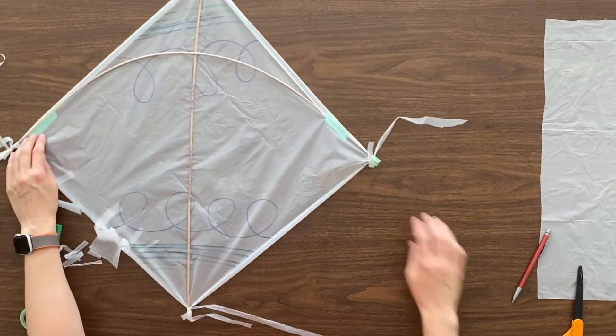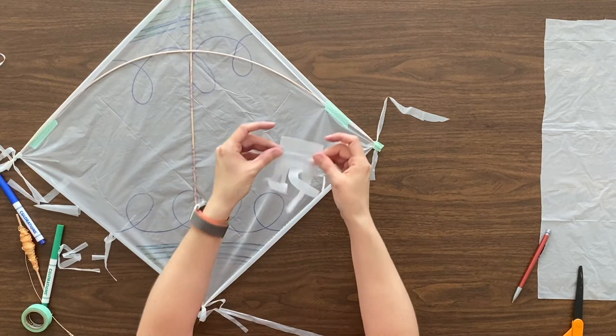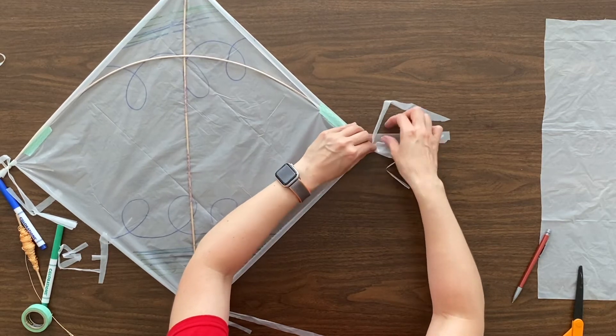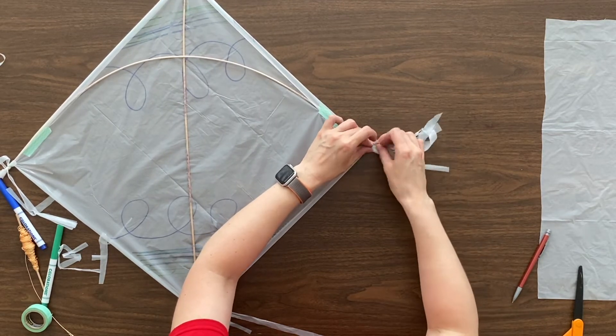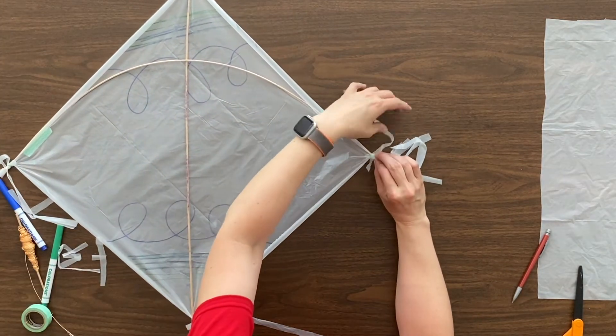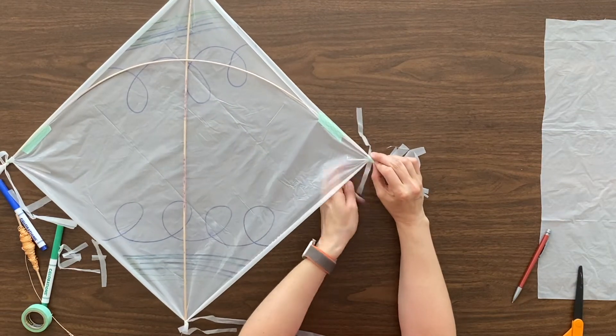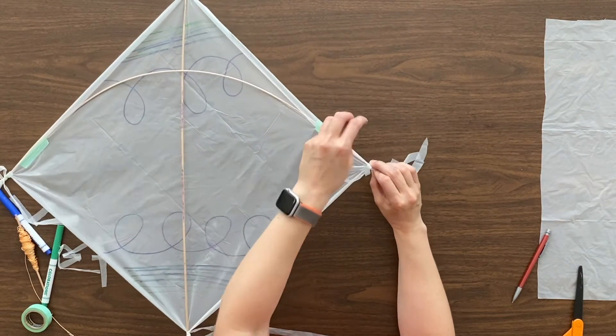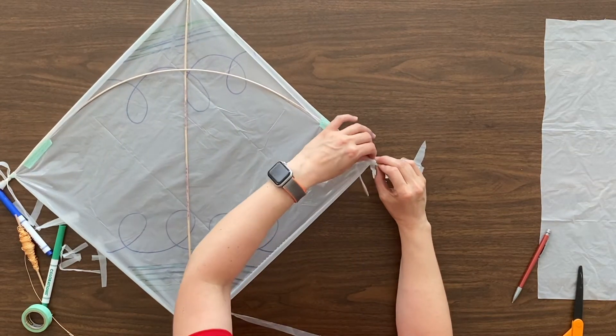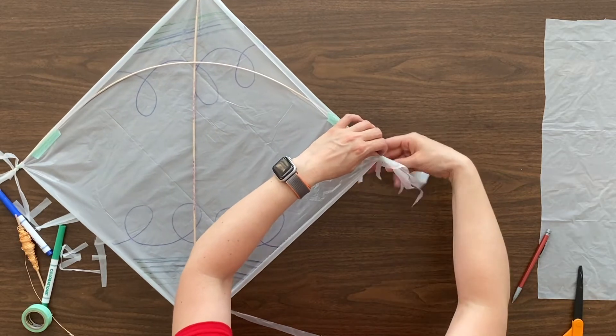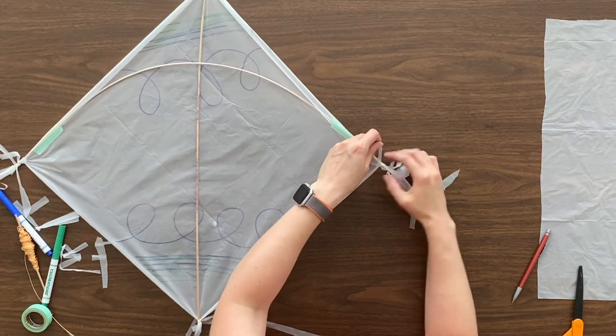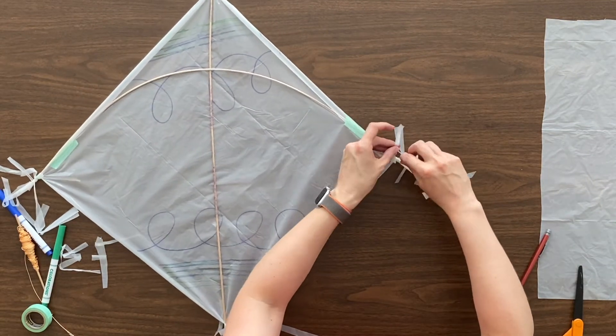I'm going to do the same on the other side with the remaining fringe. So just roll that around this corner of the kite. Take some plastic fringe, loop that around, and tie it.